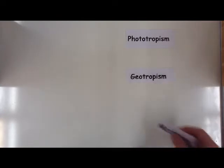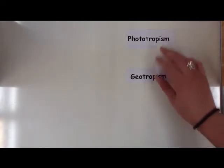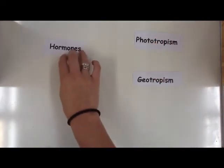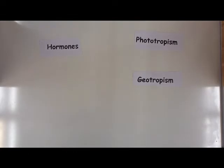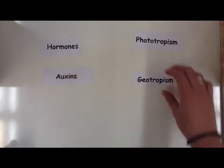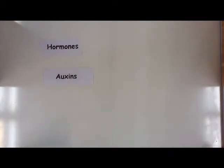Okay, so that is our geo and phototropism. Now, what is actually controlling these tropisms? It's our hormones. We have hormones in the human body. These are chemical messengers and plants have them as well. And the main type of hormone that is involved in growth in plants is auxin. Okay, so that's the main hormone that we're going to be dealing with today.